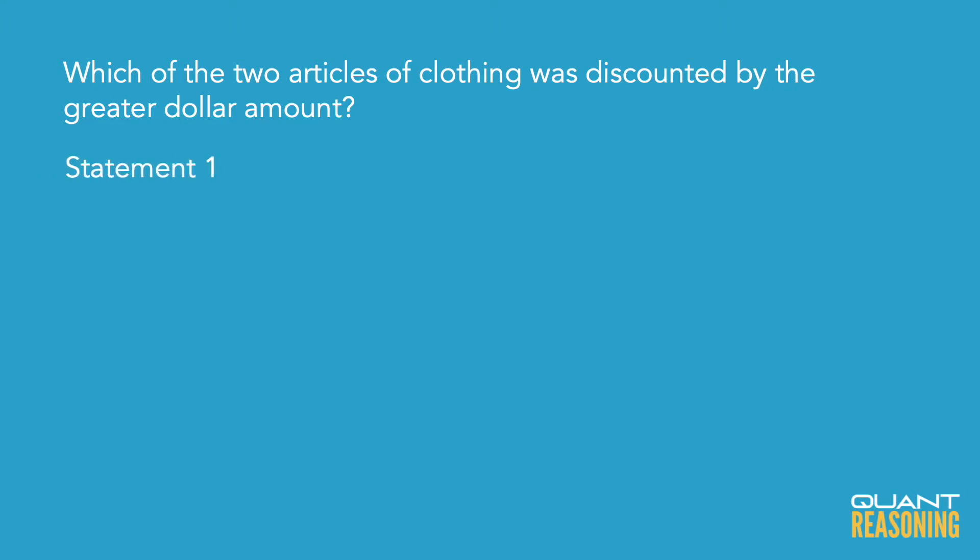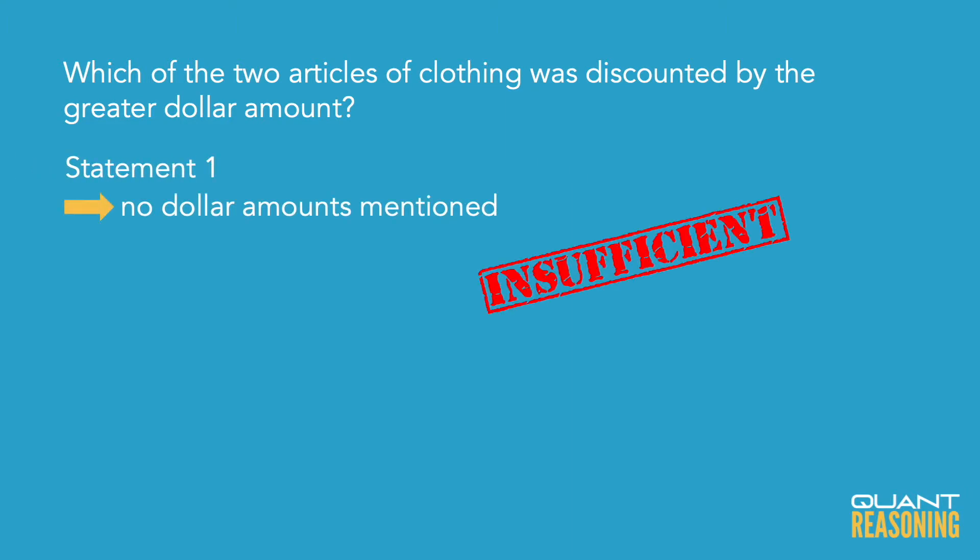I'd probably start with statement one because it doesn't talk about actual dollars — it's just giving me a percent discount, but the question was about actual dollars saved. So lacking the context of any dollar amounts, I couldn't possibly answer the question. Let's go ahead and eliminate the answer choices that claim that statement one is sufficient on its own. So A and D are gone and we're down to BCE.